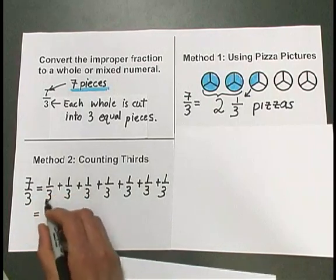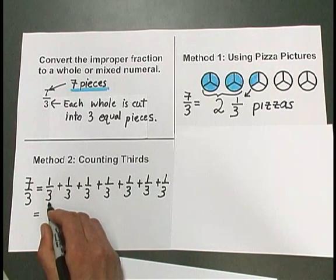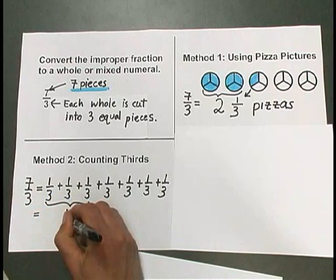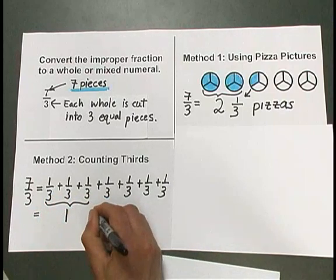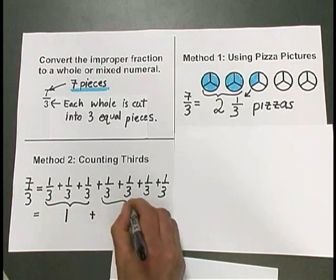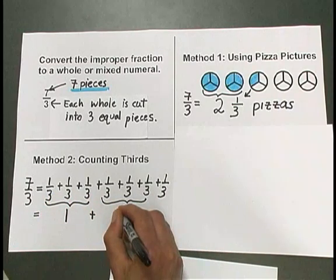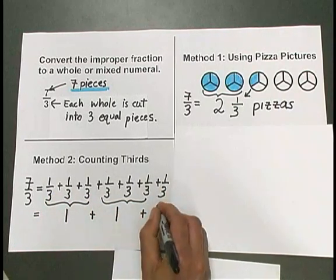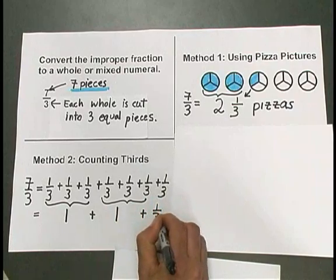Because these are 3 thirds, 3 of them grouped together will give me 1 whole, plus another 3 grouped together give me another whole. And then I still have 1 more third on the end.